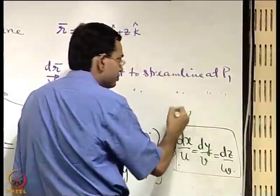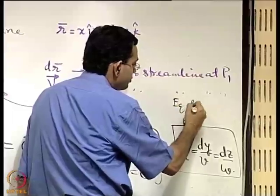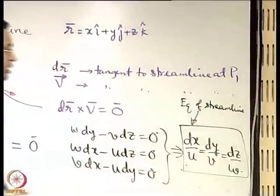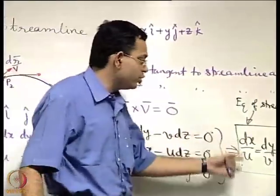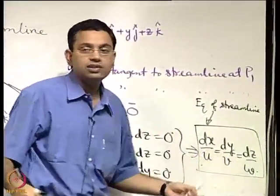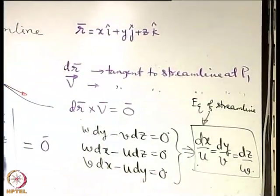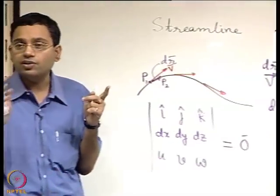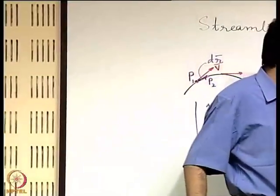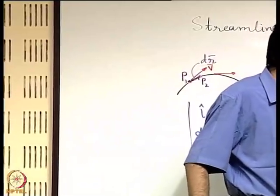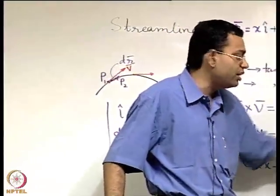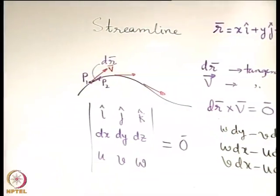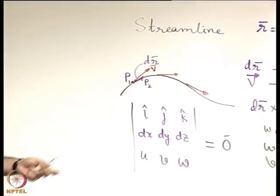Writing dr = dx·i + dy·j + dz·k and V = (u, v, w), the cross product in determinant form yields three scalar equations: w·dy − v·dz = 0, w·dx − u·dz = 0, v·dx − u·dy = 0. Combining these gives the compact streamline equation: dx/u = dy/v = dz/w. Since u, v, w are functions of x, y, z (time frozen at the chosen instant), integrating this gives the locus — the equation of the streamline.